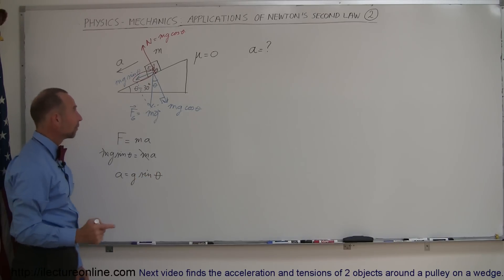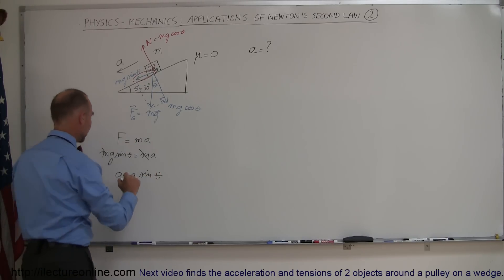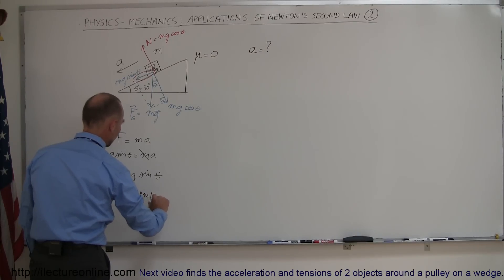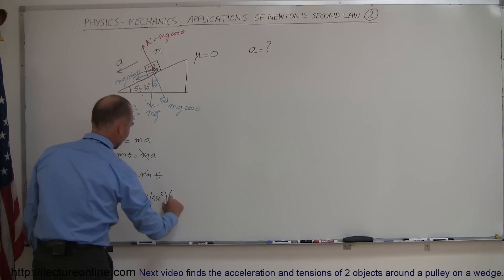Now if we plug in what we know, theta is 30 degrees, so this is equal to 9.8 meters per second squared, multiplied times the sine of 30 degrees, which is 1 half, so this ends up being 4.9 meters per second squared.